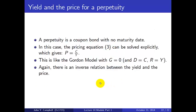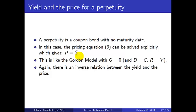Finally, the concept of a perpetuity: a coupon bond with no maturity date that pays forever. In that case, the pricing equation can be solved explicitly and gives P equals C over Y — like the Gordon growth model with no growth, where the dividend equals the coupon and R equals the yield. Once again, we find an inverse relation between yield and price.